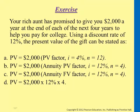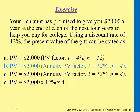Your rich aunt has promised to give you $2,000 a year at the end of each of the next four years to help pay for college. To calculate the present value of this gift, you would use the annuity factor at i equals 12%, n equals four years — the present value version, not the future value, so you have to use the PV factor.